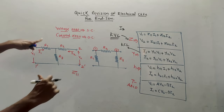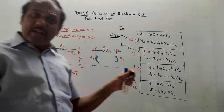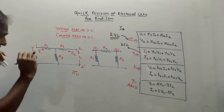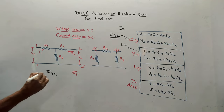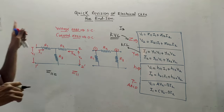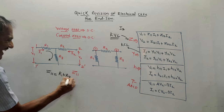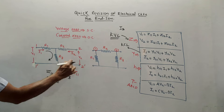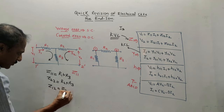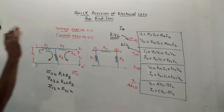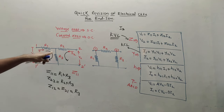One important part: if the given network is a T network — having the shape of the English letter T — you don't have to do any calculations like KVL or KCL. Direct formulae are available. For T network, Z11 equals the sum of impedances through which I1 flows, so it becomes R1 plus R3. Z22 equals the sum of impedances through which I2 flows, so it is R2 plus R3. Z12 equals Z21, which is the common resistance where both I1 and I2 flow — in this case R3. So you can directly write the Z parameter answers if the given network is a T network.